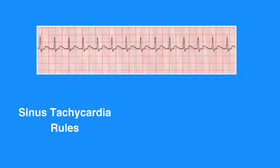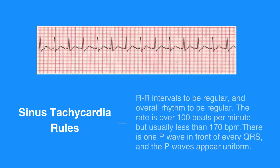The sinus tachycardia rules include R-R intervals to be regular and overall rhythm to be regular. The rate is over 100 beats per minute, but usually less than 170 beats per minute. There is one P-wave in front of every QRS and the P-waves appear uniform. The PR interval measures between 0.12 and 0.2 seconds in duration and is consistent. The QRS complex measures less than 0.12 seconds.